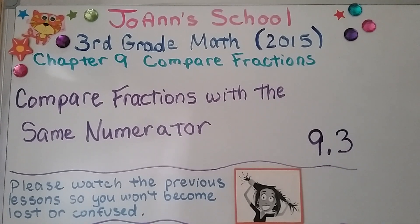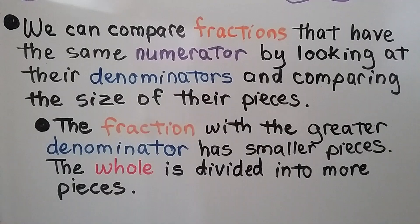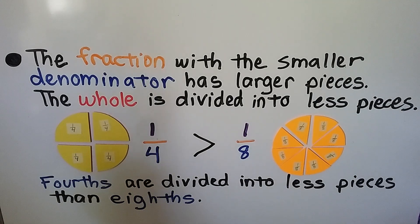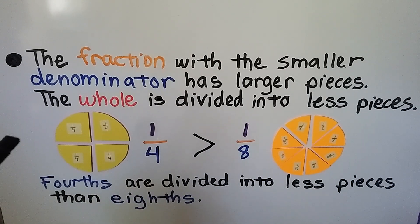Third grade math, lesson 9.3. We're going to compare fractions with the same numerator. We can compare fractions that have the same numerator by looking at their denominators and comparing the size of their pieces. The fraction with the greater denominator has smaller pieces — the whole is divided into more pieces, so they're smaller. The fraction with the smaller denominator has larger pieces because the whole is divided into fewer pieces.